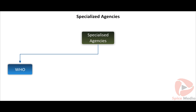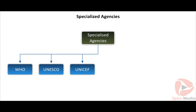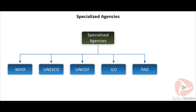The specialized agencies of the UNO include: the World Health Organization (WHO), the United Nations Educational, Scientific and Cultural Organization (UNESCO), the United Nations Children's Fund (UNICEF), the International Labour Organization (ILO), the Food and Agricultural Organization (FAO), and the World Bank (IBRD). These organizations develop the economic and social aspects of member nations.